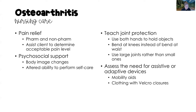We want to teach joint protection to these clients. Some examples include using both hands to hold an object rather than just one, bending at the knees instead of at the waist to pick up large items, and using large joints to perform activities rather than small joints. As nurses, we also want to assess the need for assistive or adaptive devices, such as mobility aids like walkers, canes, or crutches, and adaptive devices like clothing with Velcro closures.